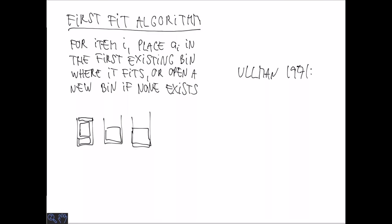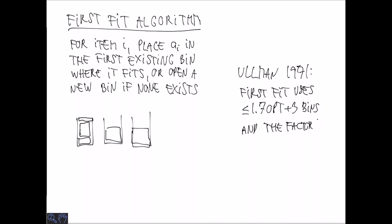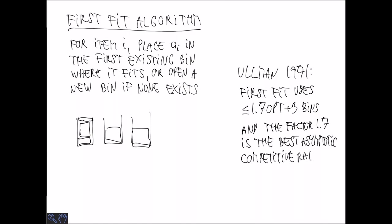In 1971, Jeff Ullmann showed that the first-fit algorithm uses at most 1.7 times OPT plus 3 bins, so its asymptotic competitive ratio is 1.7. Also, the factor 1.7 is the best asymptotic competitive ratio that one can show for the first-fit algorithm.